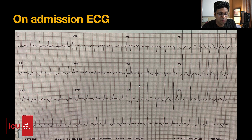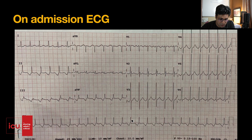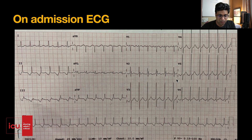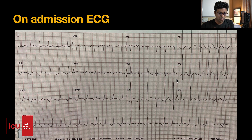Looking at the ECG grossly, this is a tachycardia — the distance between two RR complexes is two large boxes, so the rate is somewhere around 150. Looking grossly, I don't see typical features of STEMI or ST elevation. The T waves are visible but not ST depressions, so I don't see new features of acute coronary syndrome per this ECG. We may repeat the troponin a few hours later, but grossly it's a tachycardia.